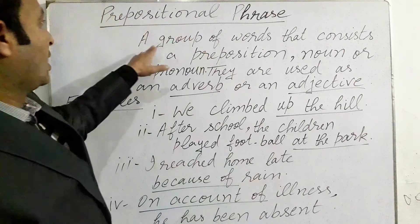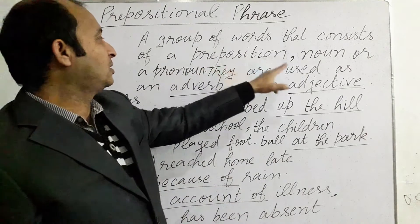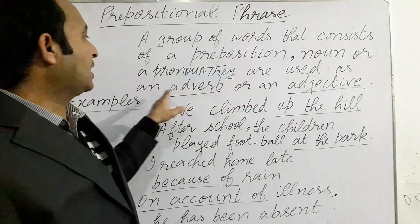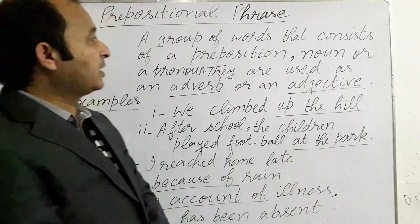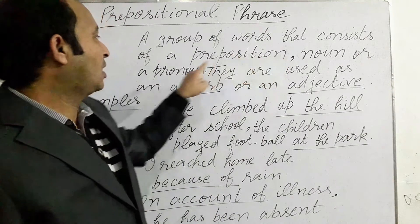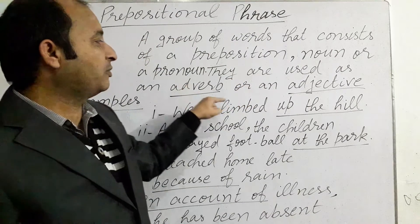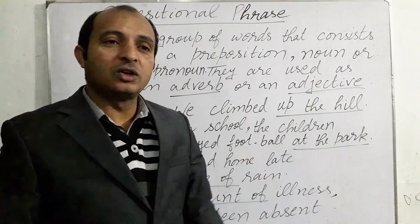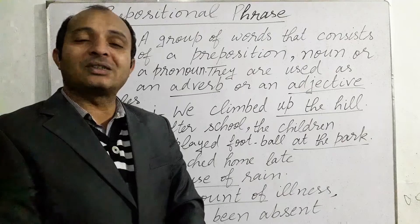A prepositional phrase is a group of words that consists of a preposition, noun, or a pronoun, and they are used as an adverb or an adjective in a sentence. We have a few examples here and we will try to understand the use of prepositional phrases in sentences.